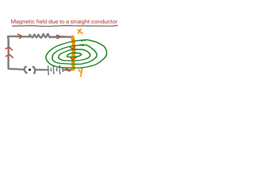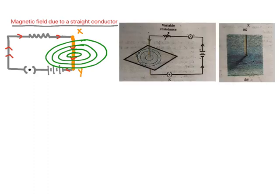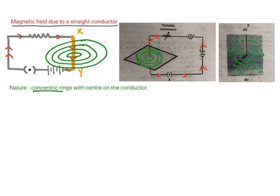To learn the nature of this magnetic field, we keep iron filings close to XY and allow current to flow through the conductor. The iron filings show a very peculiar arrangement — they arrange themselves in concentric rings around the conductor. So the nature of the magnetic field lines are concentric rings which center on the conductor.